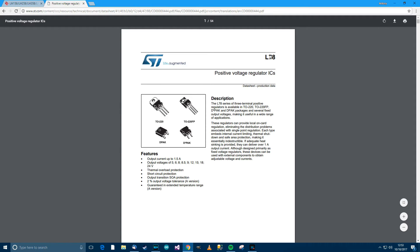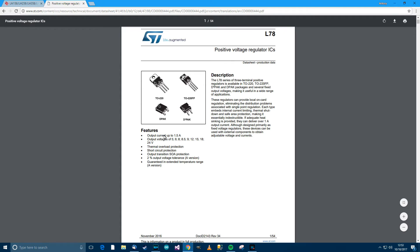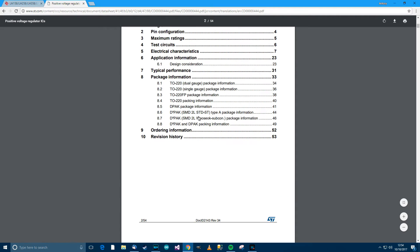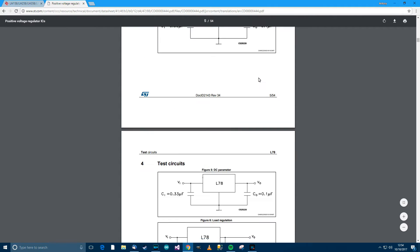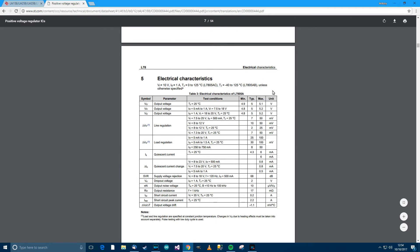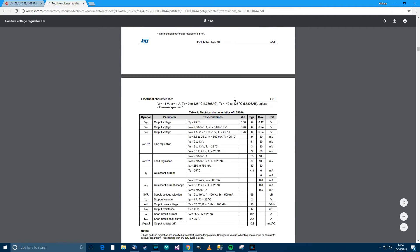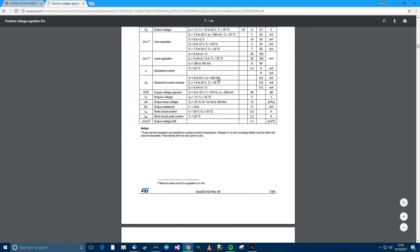So this is the L78M05, and it says output voltages are 5V. We need to go down to maximum ratings. DC input voltage range, for voltage out 5V, 35V input. So that's the absolute maximum. Now usually there's a recommended, but that's quite a high maximum, so 35V, I'm pretty sure will be okay.